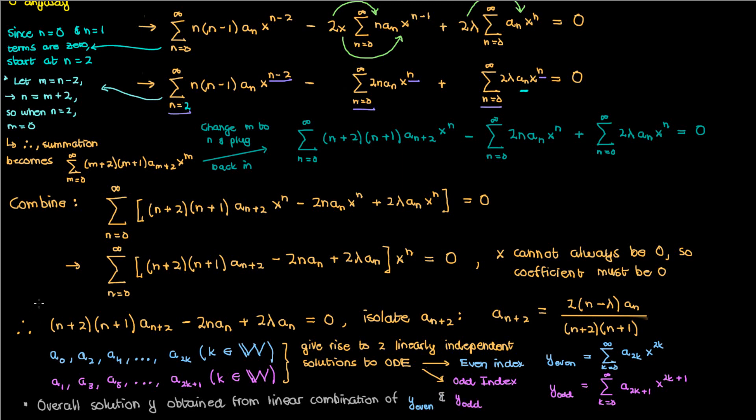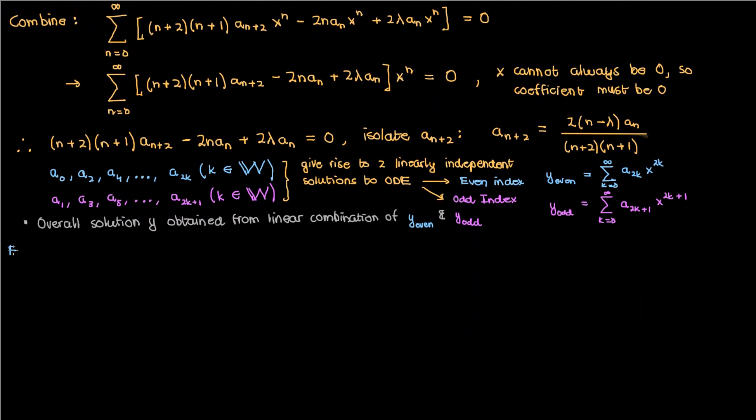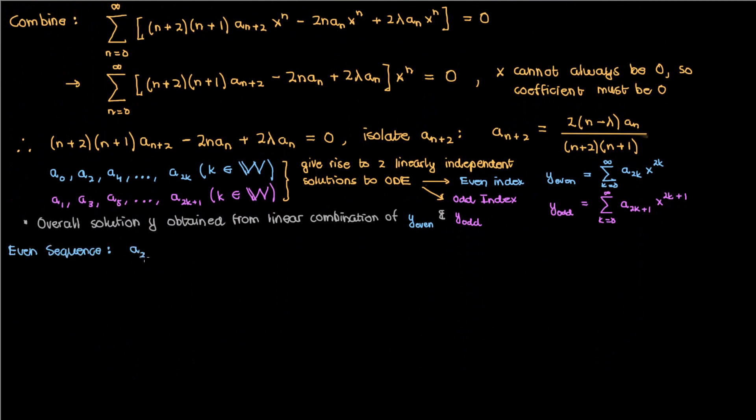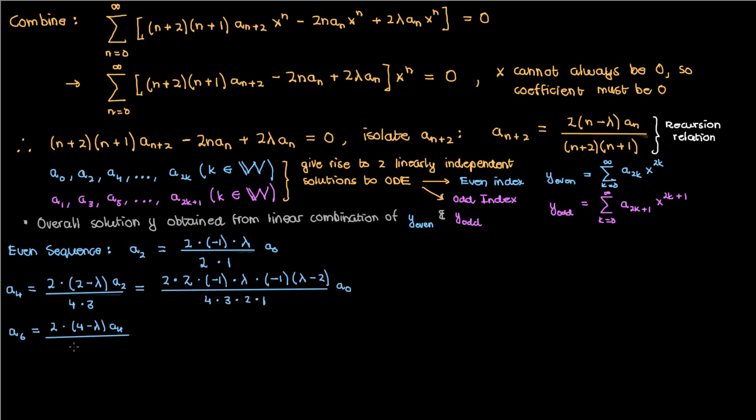Now that we've set things up, let's actually solve for the coefficients. We'll start with the even sequence. Now in terms of a_0, a_2 is given by substituting n equals 0 into our recursion relation, from which we find that a_2 is just 2λa_0 over 2×1. a_4 is found by substituting n equals 2 into the recursion relation, which gives us the following in terms of a_2. And then if we plug in the a_2, then in terms of a_0, this is what we have for a_4. And then a_6 is similarly given by the following expression, which can be simplified to this in terms of a_0.